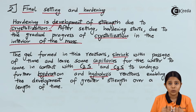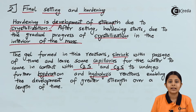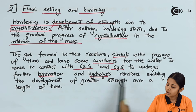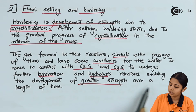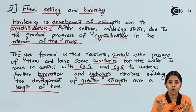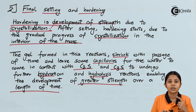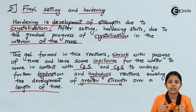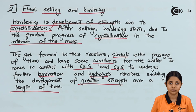Hardening starts due to the gradual progress of crystallization in the interior of the mass. The gel formed shrinks with passage of time and leaves some capillaries for water to come into contact with C2S and C3S to undergo further hydration and hydrolysis. After setting is complete, we can splash more water on the hardened cement; it absorbs the water into its C2S, C3S, and C3A, and once all capillaries are filled, both setting and hardening are complete.